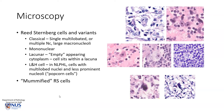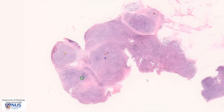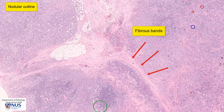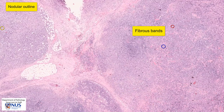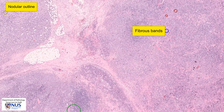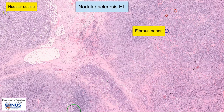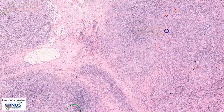Let's go back to our microscopic slide. At low magnification, we can see that this lymph node has a somewhat nodular outline, and in between the nodules we can see pink fibrous bands. There are fibrous bands between the nodules, so we have areas of nodular architecture and sclerosis. Hence, this is the nodular sclerosis subtype of Hodgkin lymphoma, one of the four patterns of classical Hodgkin lymphoma.